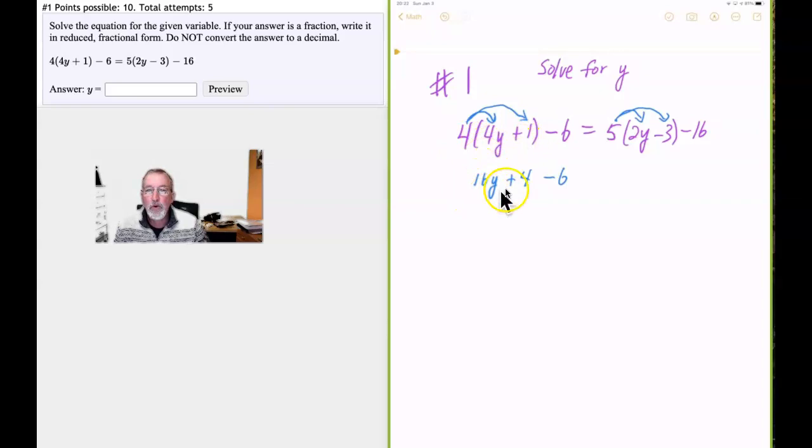And that's going to be equal to the 5 distributed over 2y minus 3. So here we have a change of sign because it's subtraction. So 5 times 2y is 10y. And negative 3 times 5, negative 15 minus 16. And we'll continue to combine like terms and then the next step will be to isolate y and solve for it.